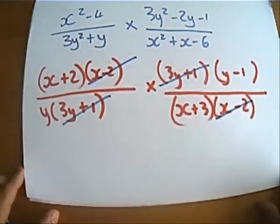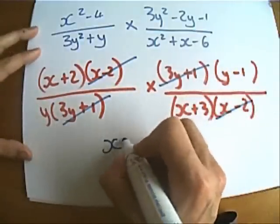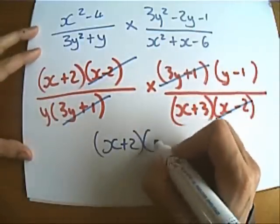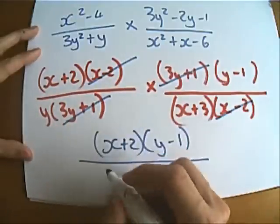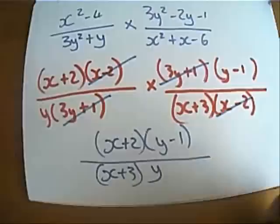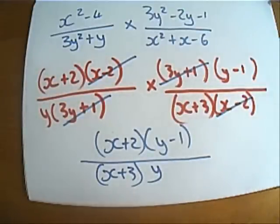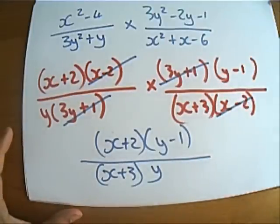So I can simplify before I have to do any sort of tidying up and multiplying, so in the end what am I going to be left with? x plus 2 times y minus 1 on the top, and on the bottom, y times x plus 3. And that, ladies and gentlemen, is about as complicated as it's going to get at this stage, in terms of multiplying an algebraic fraction.